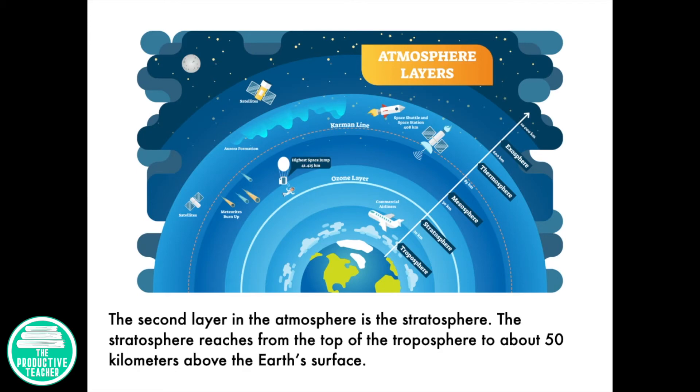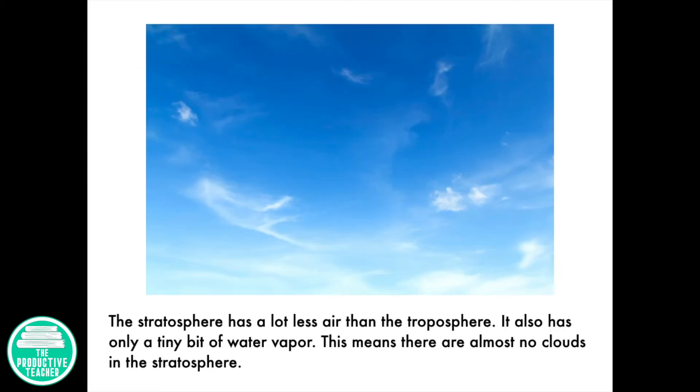The second layer in the atmosphere is the stratosphere. The stratosphere reaches from the top of the troposphere to about 50 kilometers above the Earth's surface. The stratosphere has a lot less air than the troposphere. It also has only a tiny bit of water vapor. This means there are almost no clouds in the stratosphere.